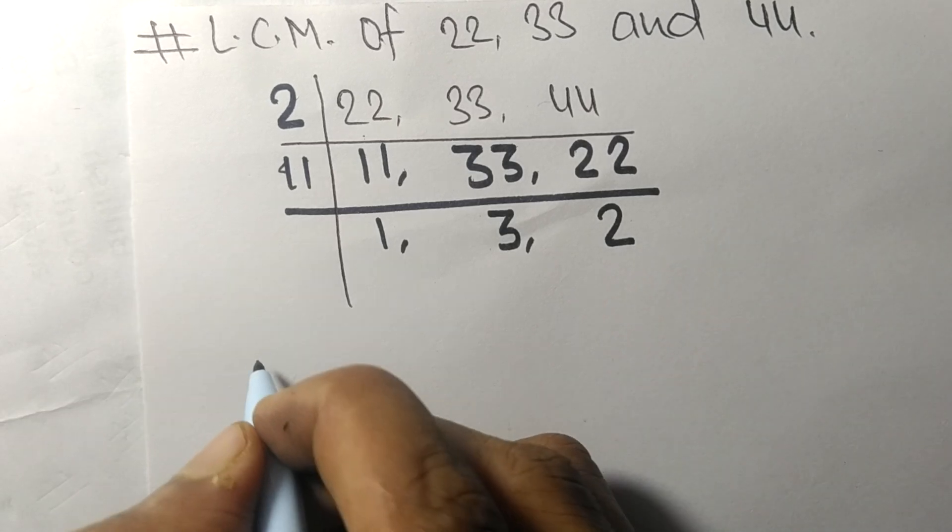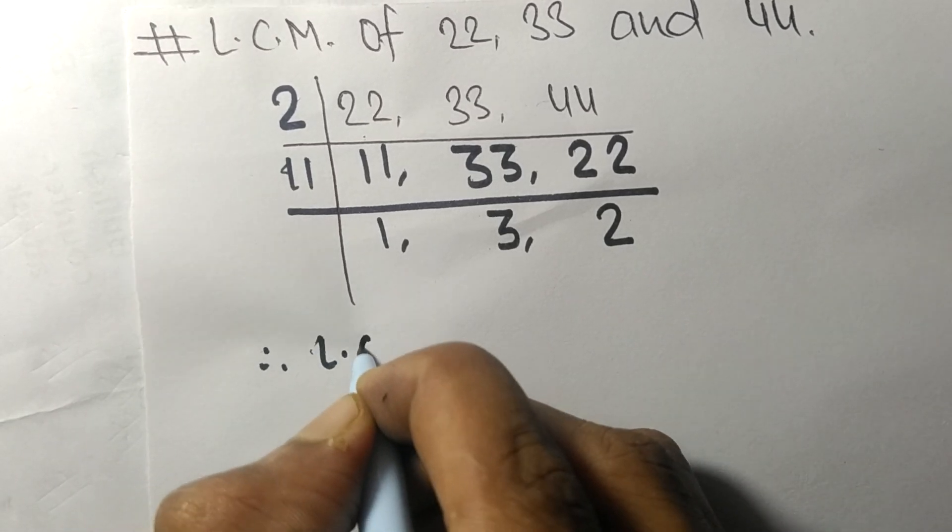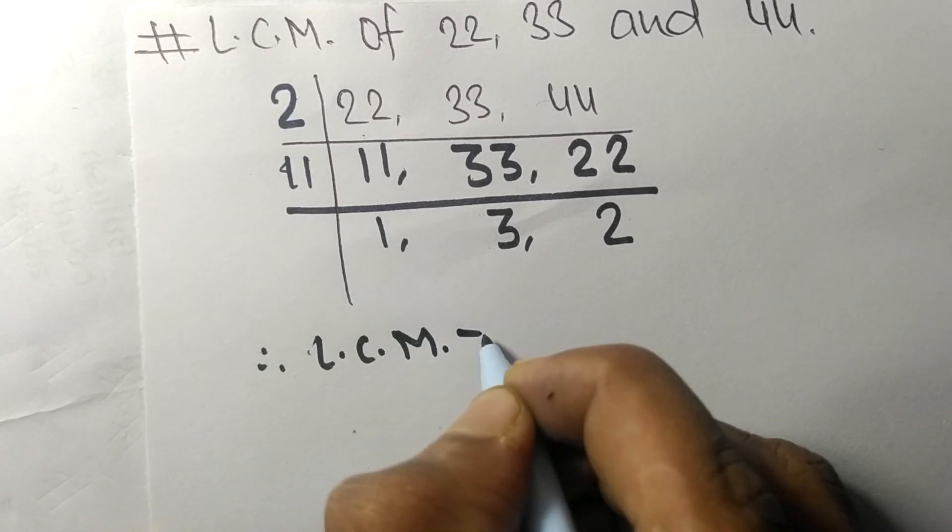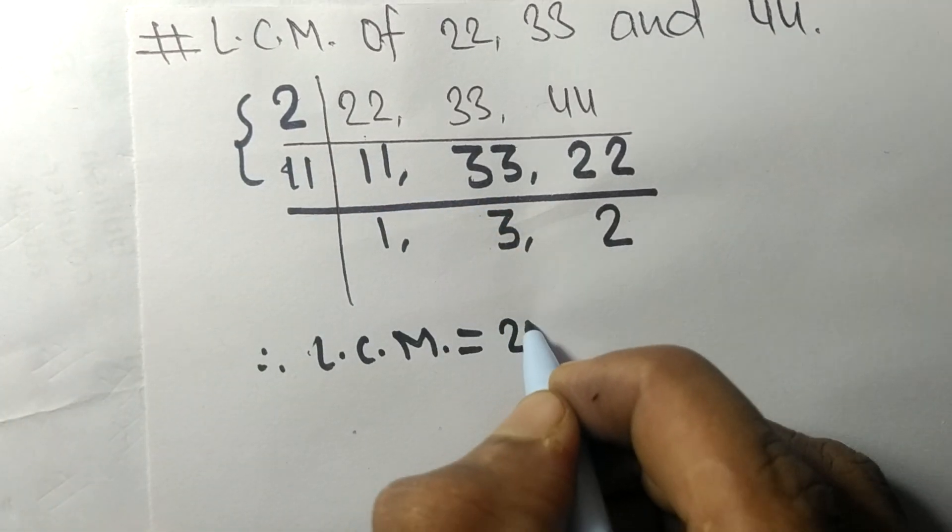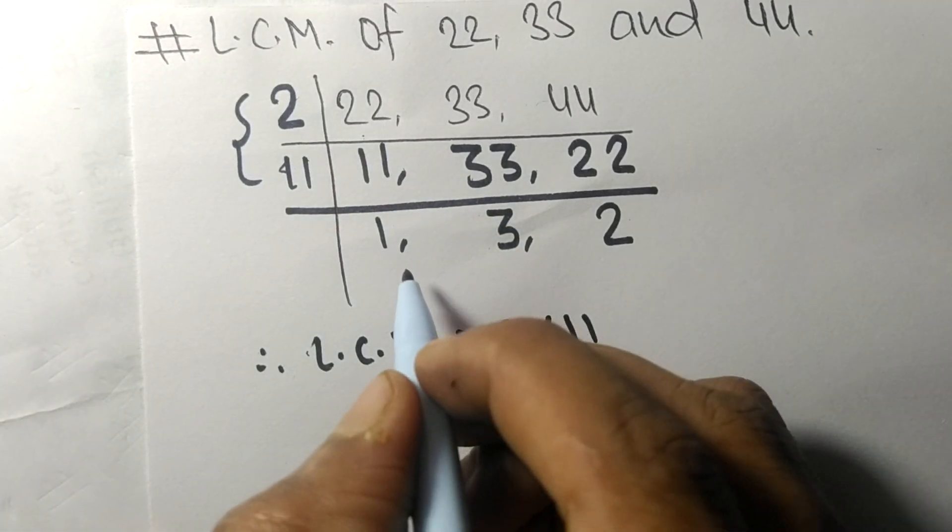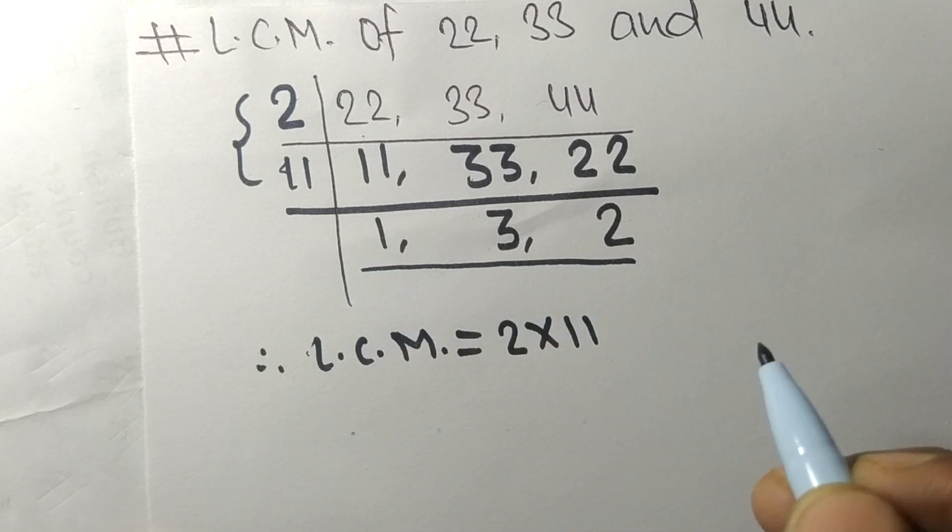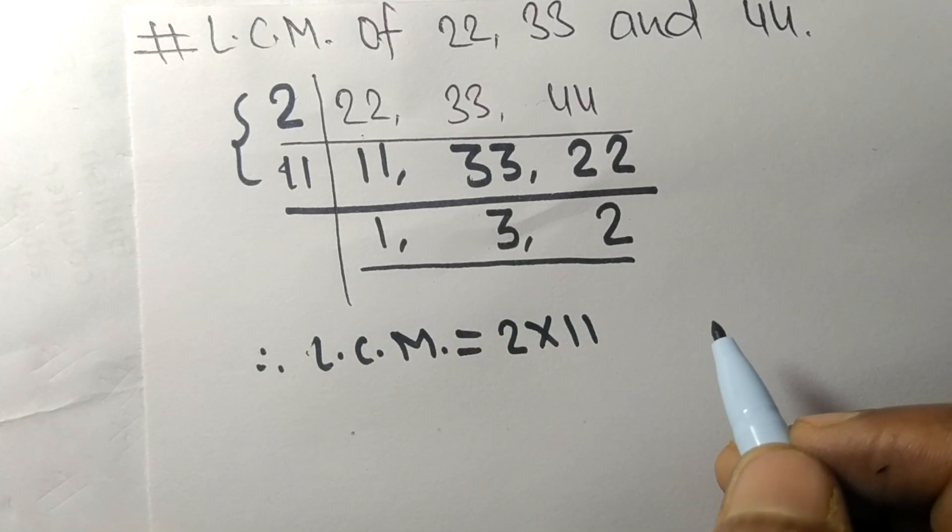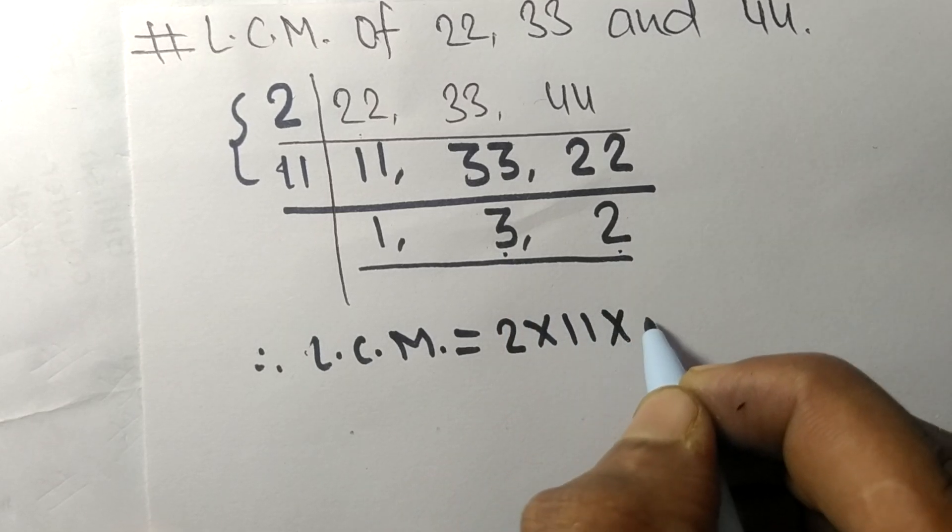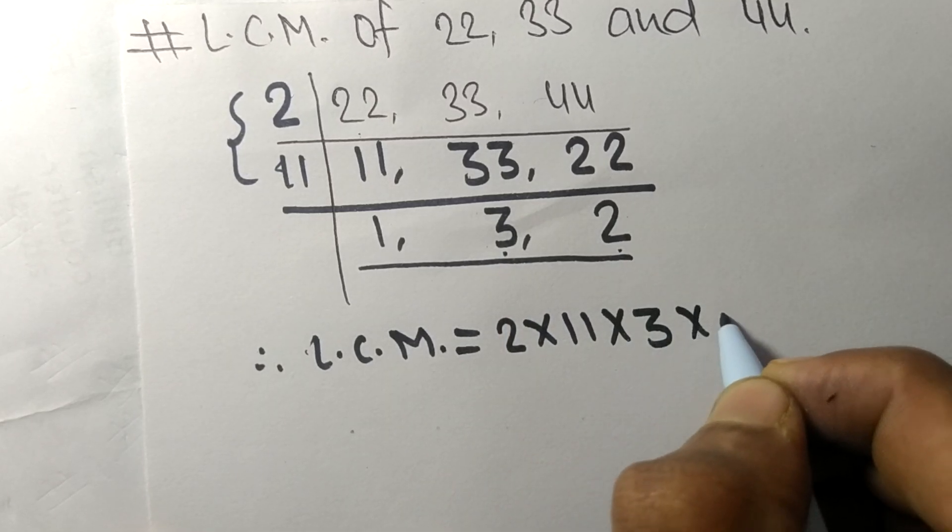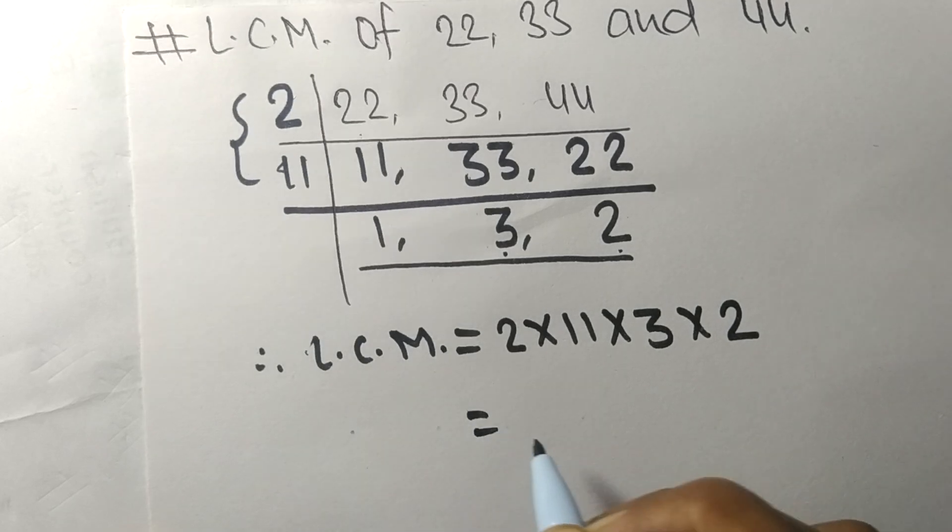Therefore, its LCM is equal to, from this side, it is 2 times 11. From this side we choose the numbers greater than 1, that is 3 and 2. So multiplied by 3 and 2.